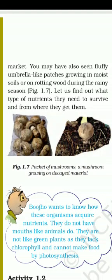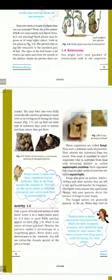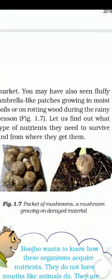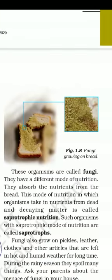Fungus is a living being, so it also needs to take nutrition. The nutrition that fungus performs is saprotrophic nutrition. Fungus cannot make its own food — it depends on dead and decayed matter. The singular form is 'fungus' (F-U-N-G-U-S) and the plural form is 'fungi' (F-U-N-G-I).